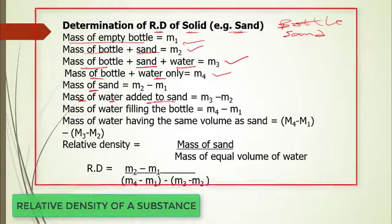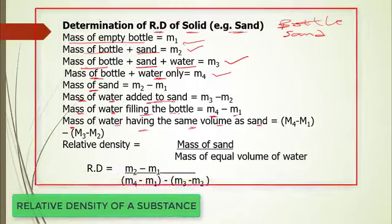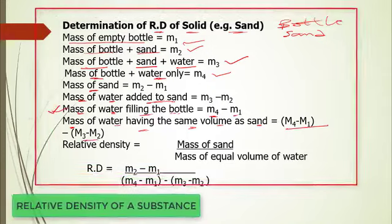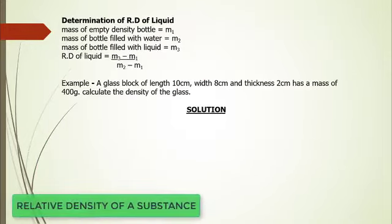The mass of water filling the bottle is m4 minus m1 (bottle plus water, minus empty bottle). The mass of water having the same volume as the sand is (m4 minus m1) minus (m3 minus m2). The relative density of sand is then found by taking the ratio of the mass of sand to the mass of an equal volume of water using these expressions.